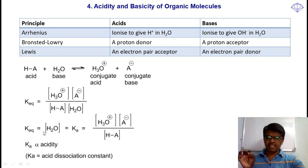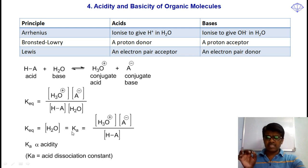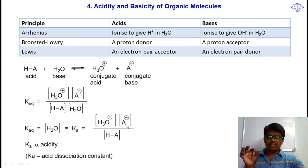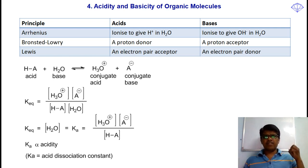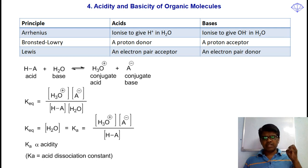To simplify this equation, water is common in both sides and, since it is very large in amount, it can be taken out and becomes a constant — that is Ka, the acid dissociation constant. Ka is equal to the concentration of H3O-plus multiplied by A-minus, divided by the acid concentration. Ka is the acid dissociation constant — if a compound is more acidic, its Ka value will be more. Acidity is proportional to Ka.